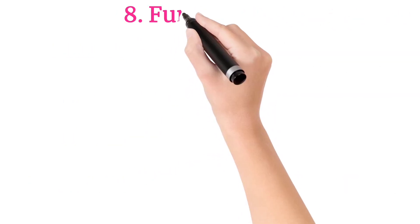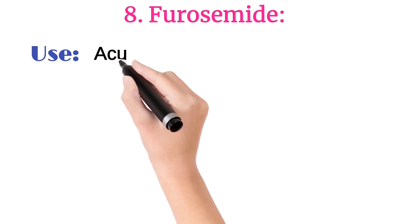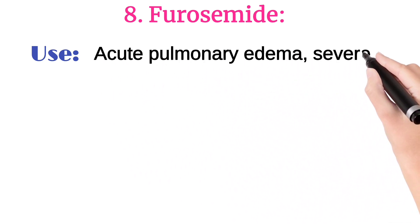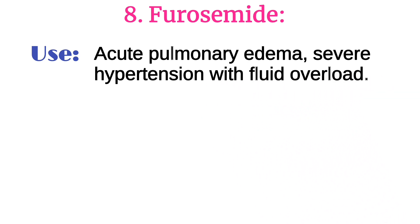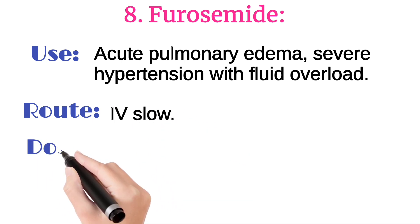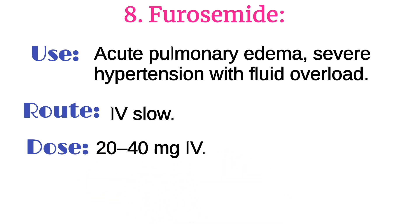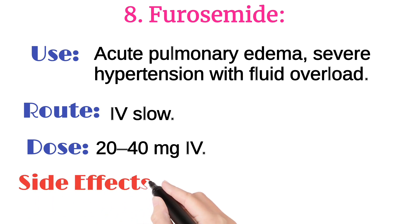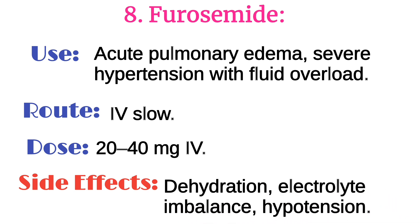Number 8 is furosemide. It is used in acute pulmonary edema and severe hypertension with fluid overload. It is injected intravenously. Its usual dose for adults is 20 to 40 mg intravenously by slow injection. It can cause dehydration, electrolyte imbalance, and hypotension.